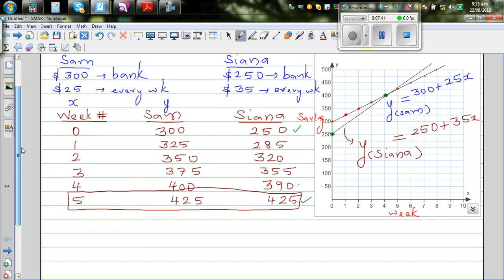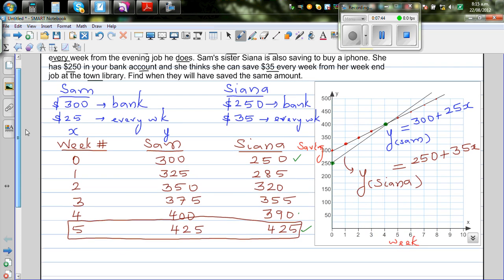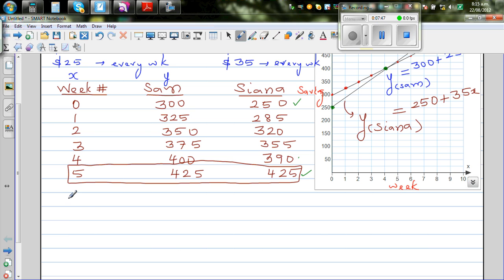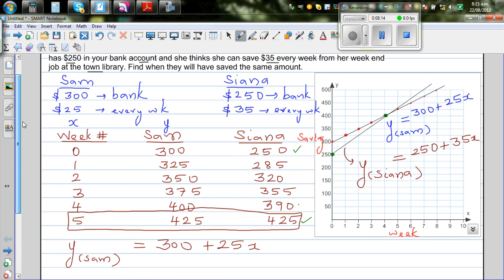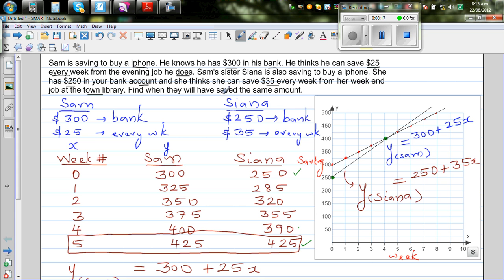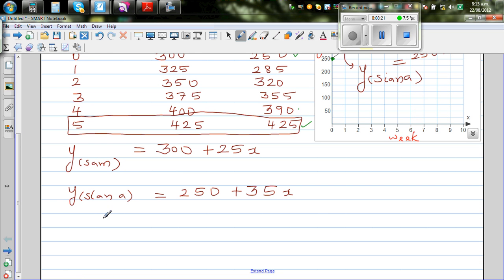Now without doing the table and the graph, can we do it in an algebraic way? We know Y subscript S, that is saving for Sam, can be written as 300 plus 25x. And y, which is saving for Sienna, is 250 plus 35x. So the question is, when would the savings be the same? When will they have saved the same amount?